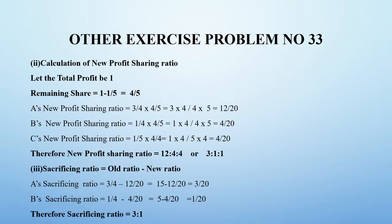For B, old ratio is 1/4 and new ratio is 4/20. Making the common factor 20: 5/20 minus 4/20 equals 1/20. Therefore the sacrificing ratio of A to B is 3:1.